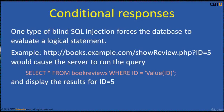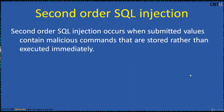Conditional responses are one type of blind SQL injection that forces the database to evaluate a logical statement. For example, a book review website uses a query string to determine which book review to display, causing the server to run: SELECT * FROM book_reviews WHERE id = [id parameter]. Second order SQL injection occurs when submitted values contain malicious commands that are stored rather than executed immediately.